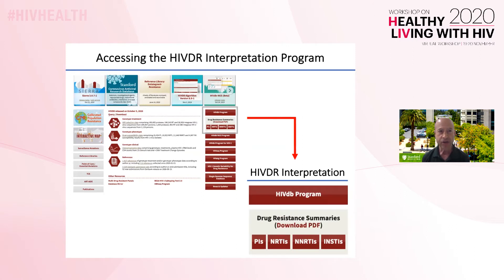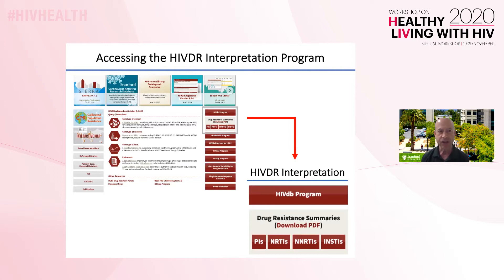You can access the interpretation program and the pages containing supporting educational material at the upper right part of the homepage. Clicking on the HIV-DB Program tab will take you to the most commonly used form for entering data — the one that allows clinicians to enter lists of mutations in the RT, protease, and/or integrase genes.